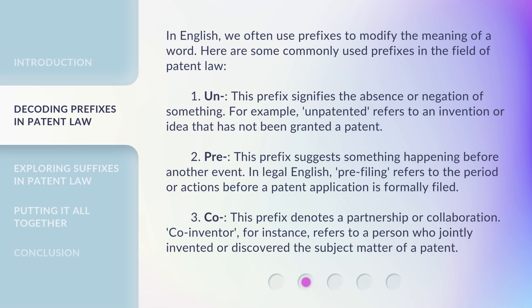In English, we often use prefixes to modify the meaning of a word. Here are some commonly used prefixes in the field of patent law. 1. Un — this prefix signifies the absence or negation of something. For example, unpatented refers to an invention or idea that has not been granted a patent. 2. Pre — this prefix suggests something happening before another event. In legal English, pre-filing refers to the period or actions before a patent application is formally filed. 3. Co — this prefix denotes a partnership or collaboration. Co-inventor, for instance, refers to a person who jointly invented or discovered the subject matter of a patent.